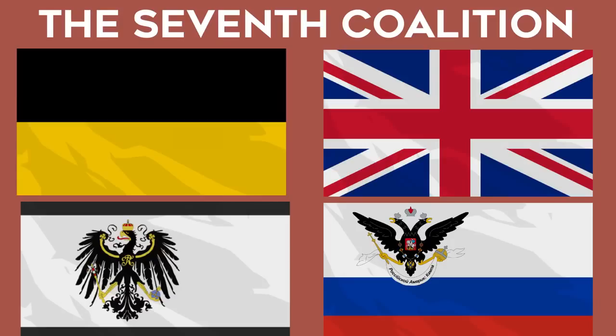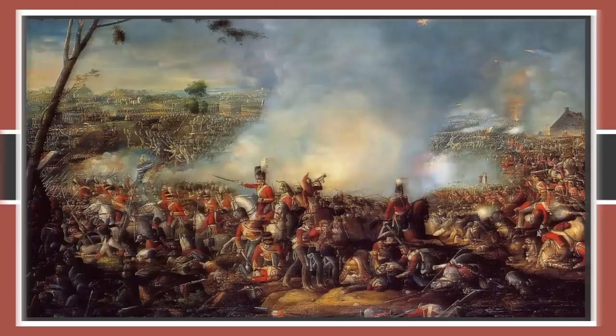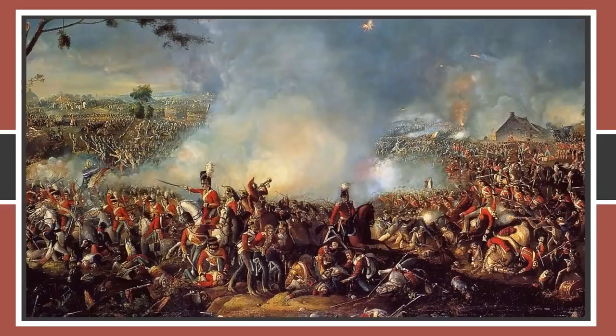Napoleon planned to defeat his enemies at Waterloo and, from a position of power, sue for peace. Unfortunately for Napoleon, his plans failed, and the British and Prussian forces at Waterloo defeated him. He was exiled to St. Helena in the Atlantic Ocean, where he died.